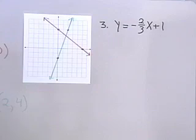Let's look at one more straight line. y is equal to negative 2 thirds x plus 1. I want to graph this line.